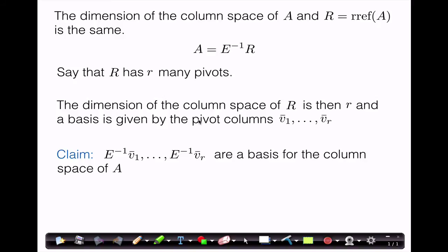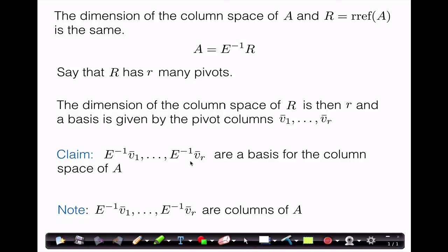Now it just suffices to prove this claim. One interesting thing to note is that this claim is telling us we can find a basis for the column space of A among the columns of A itself. Each of the vectors E inverse V1 through E inverse Vr are actually columns of A. That's because V1 through Vr are columns of R, and by the definition of matrix-matrix product, the kth column of A is E inverse times the kth column of R. So not only are we finding a basis for the column space of A, we're finding this basis from among the columns of A itself.